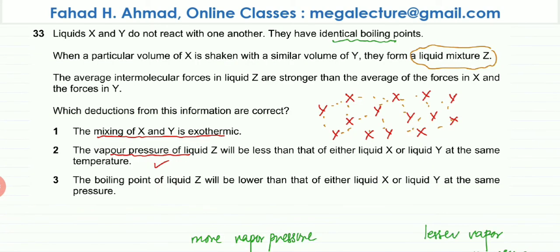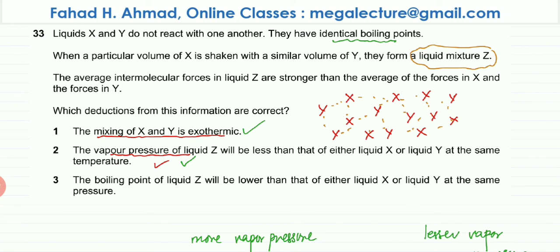Going back to the question, option 2 states that the vapor pressure of liquid Z will be less than that of either X or Y at the same temperature — this statement is definitely true. So both the first and second statements are correct.